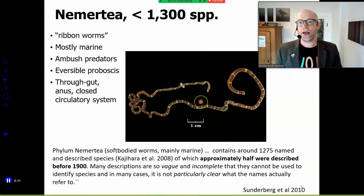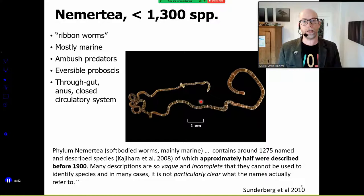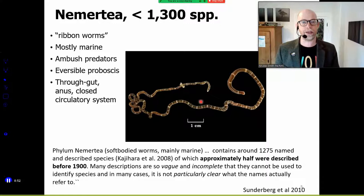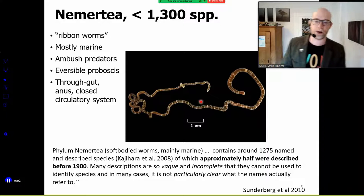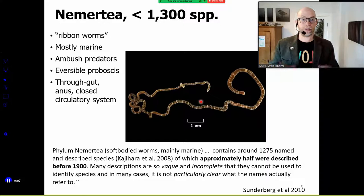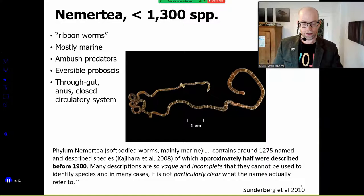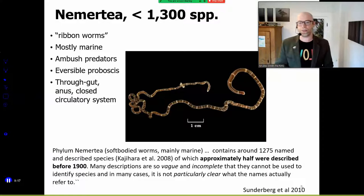This box describes the synapomorphies of the nemerteans from your text. We'll call them ribbon worms. They're mostly marine, they are ambush predators, and they have this unique eversible proboscis. A quote from a dour Scandinavian taxonomist: the phylum contains about 1,300 named and described species, approximately half of which were described before the 1900s. He's quite critical, saying most of those descriptions are so vague and incomplete that they cannot be used to identify species, and in many cases it's not even clear what the names are actually referring to.